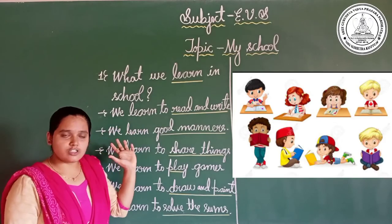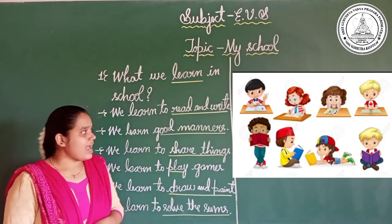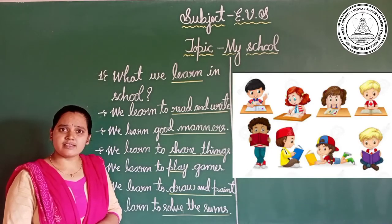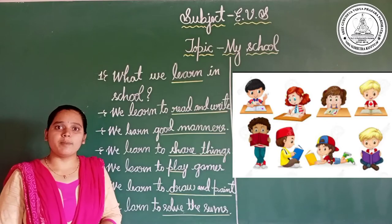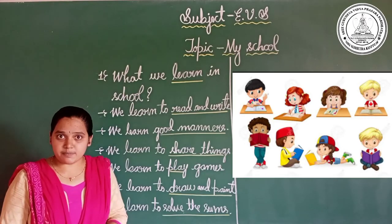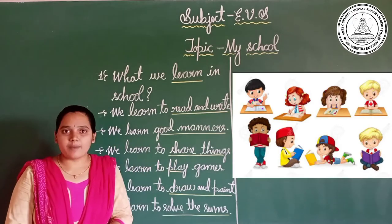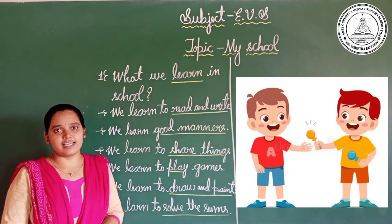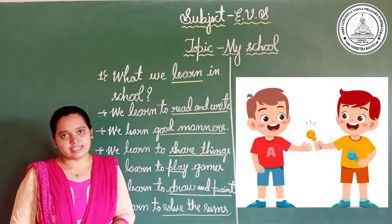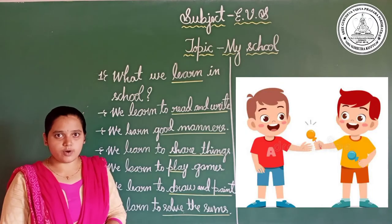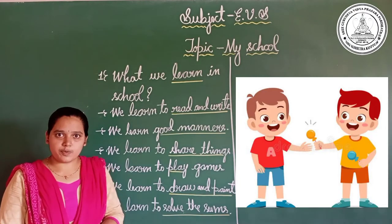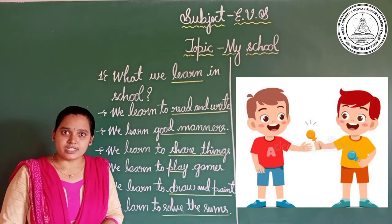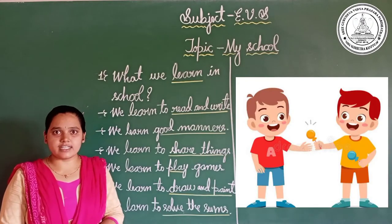Alok and his friends learn to read and write in school, and they also learn good manners and good habits. What are the good habits and good manners? Reading well, maintaining a queue while drinking water, and maintaining discipline in the school — these are all the good manners and habits we learn in school. And also, we learn to share things. If your friend forgot to bring an eraser or sharpener, you will give yours. While lunch time, you will share your food with friends. You learn to share things in school.